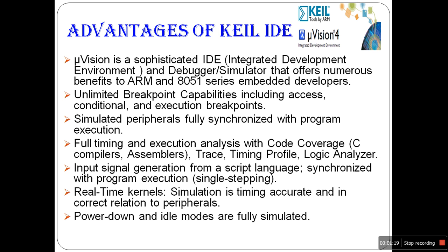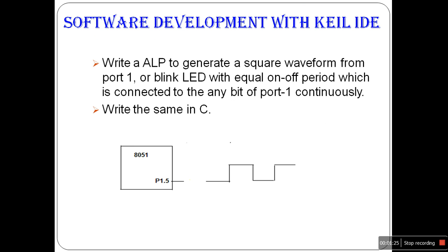First we develop software in assembly, then in embedded C using Keil IDE. We have to write both assembly and C programs for the same task: to generate a square waveform from Port 1 or Port 2, or blink an LED with equal on-off periods connected to any pin of Port 1 continuously.